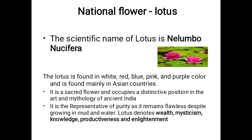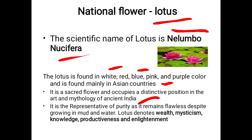Next is the national flower. Lotus is our national flower with the scientific name Nelumbo nucifera. Lotus is found in different colors like white, red, blue, pink, and purple, and is mainly found in Asian countries. This flower is a sacred flower and occupies a distinctive position in the art and mythology of Indian history. Many gods and goddesses are depicted holding the lotus flower, which represents purity — because lotus grows from mud and water and still remains flawless.